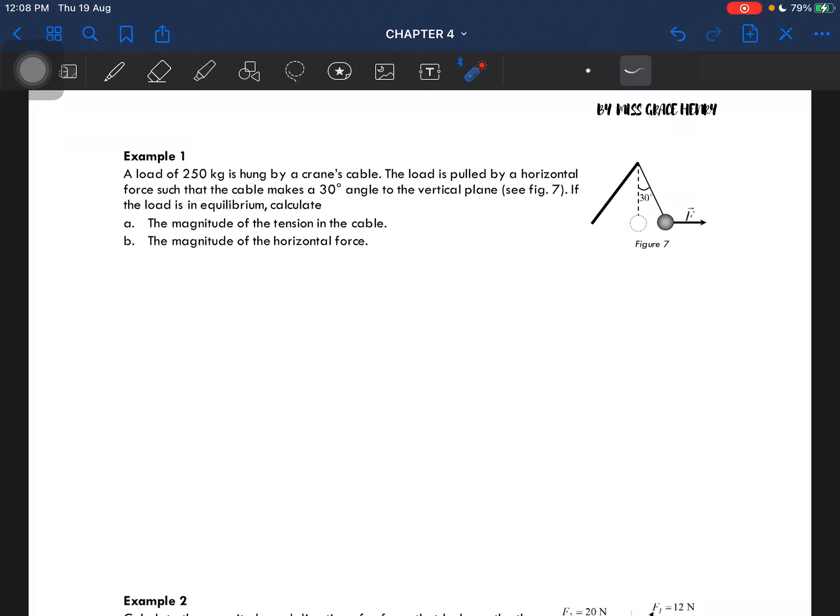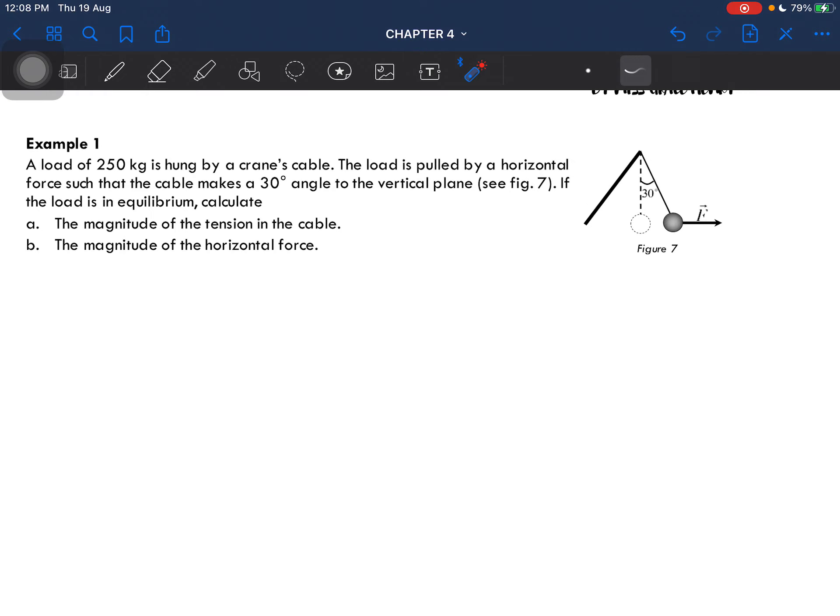Alright, let's look at example number one. A load of 250 kilograms is hung by a crane's cable. The load is pulled by a horizontal force such that the cable makes a 30 degree angle to the vertical plane. If the load is in equilibrium, calculate the magnitude of the tension in the cable and the horizontal force.